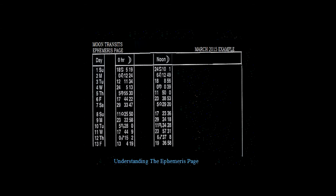Now we go to March 7th of 2015 on a Saturday. We look at the moon and it is in 5 degrees Libra. We compare that to the next day, Sunday, which is 17 degrees Libra. So we compare the difference between 5 degrees Libra and 17 degrees Libra, and we again have 12 degrees difference. That 12 degree difference means the daily motion of the moon is moving at 12 degrees, and Libra is an air sign.